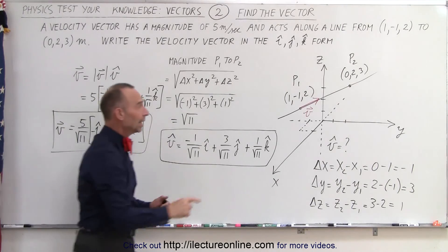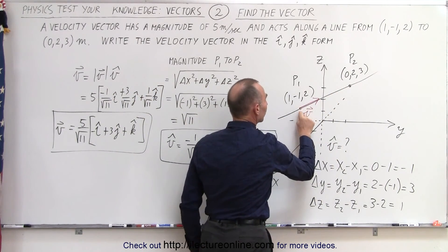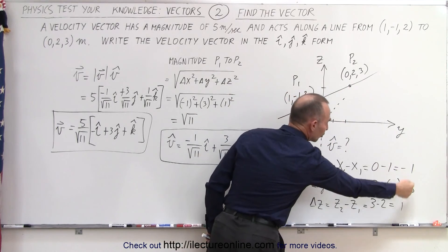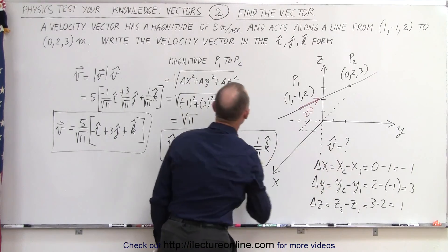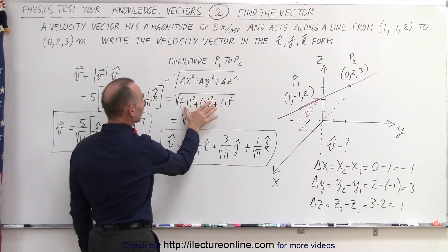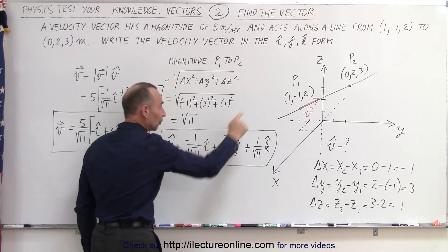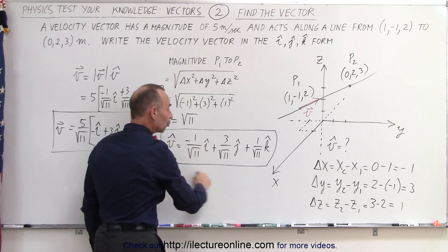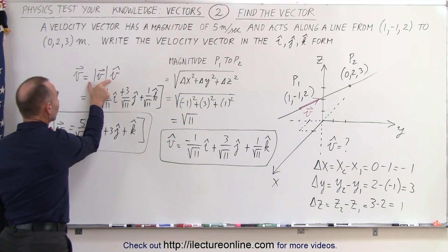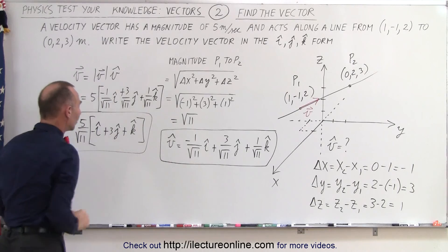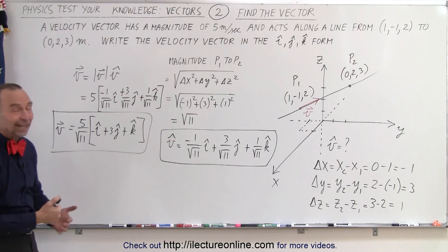So to summarize: we get the direction by making a vector from point one to point two. We first find the changes in x, y, and z. We then find the unit vector by taking the magnitude of that displacement and dividing the change in x, y, and z by that magnitude. Once we have the unit vector, we multiply by the magnitude of vector v to get the vector v in terms of the i, j, and k components. That's how it's done.